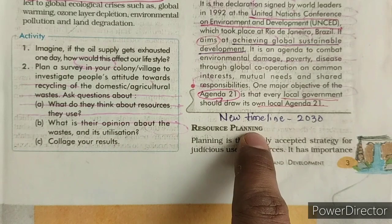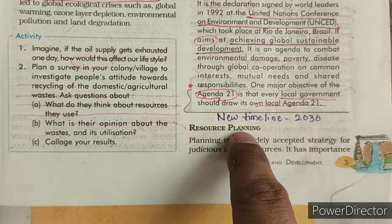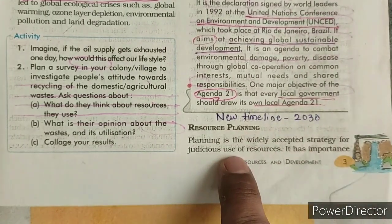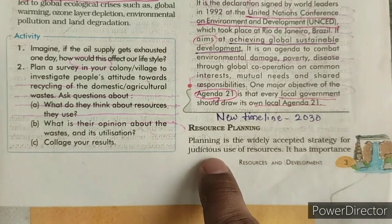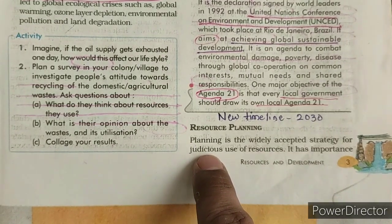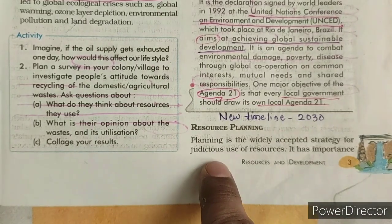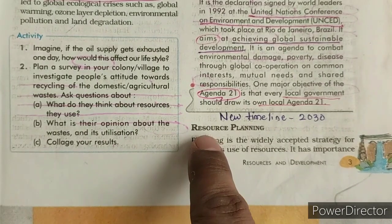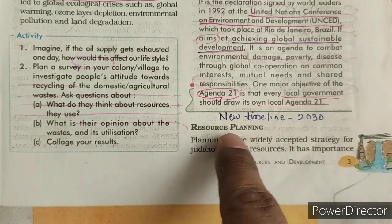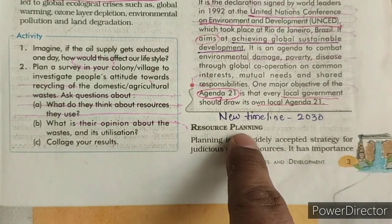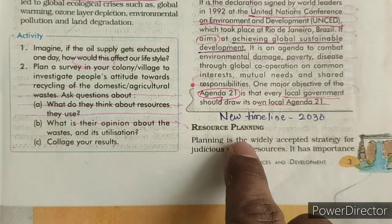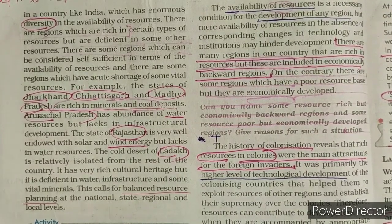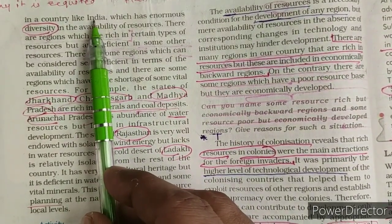Our next point is resource planning. Planning means a strategy for judicious — proper — use of resources, keeping in mind their future requirement and future importance. Resource planning means proper use of resources and their distribution in all areas and all regions of the country. Resource planning is very much important.